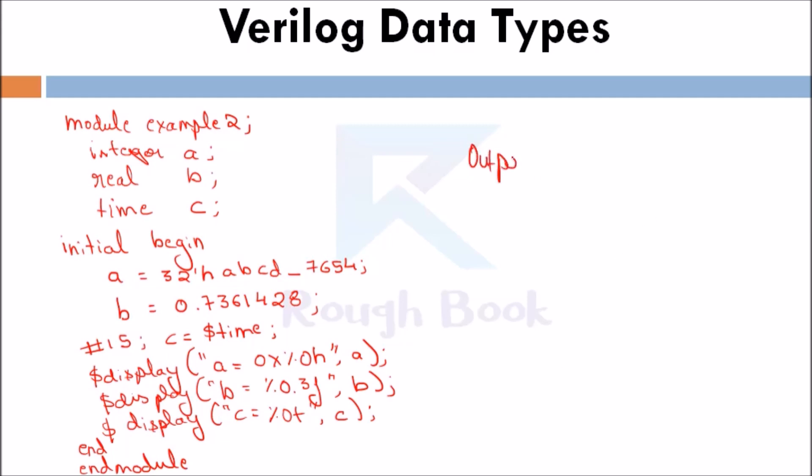For this, the output will be: a is equal to 0xABCD7654. This is an integer value. For b, as we have given 0.3, it will only show three decimals after the decimal point. And time, as you can see, the current simulation time is 15. So this is the output. In this we can see for the integer, real, and time.